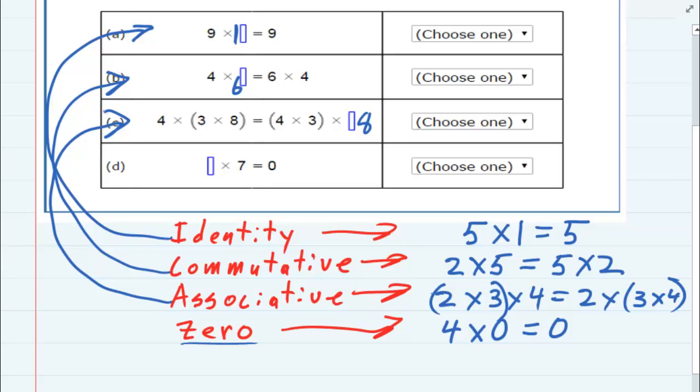And then lastly, some number times seven equals zero. The only number that we can multiply seven by to get zero is zero, and that is the zero property.